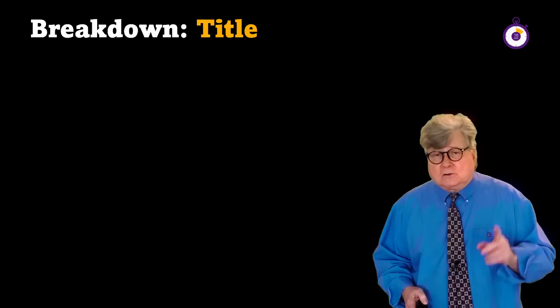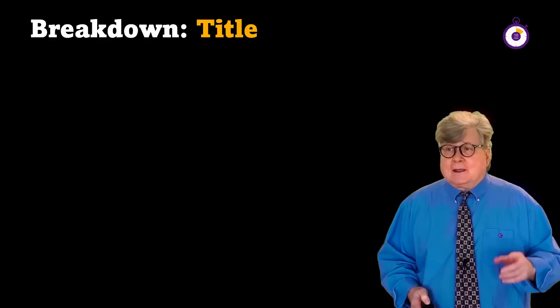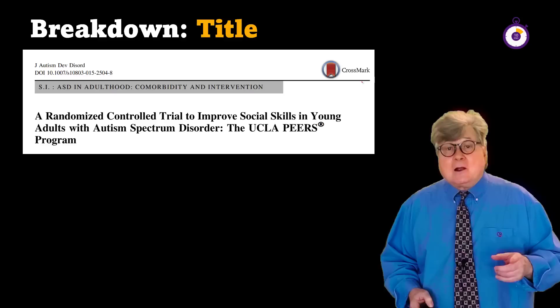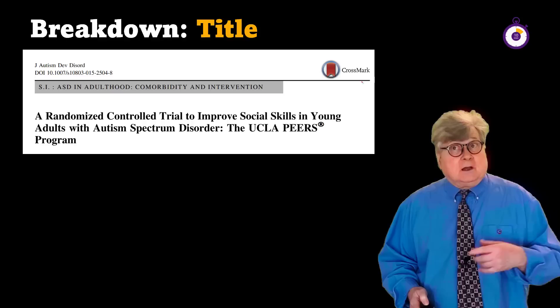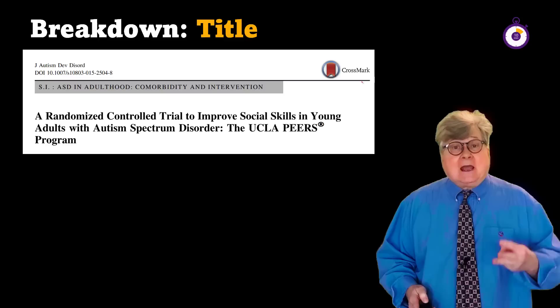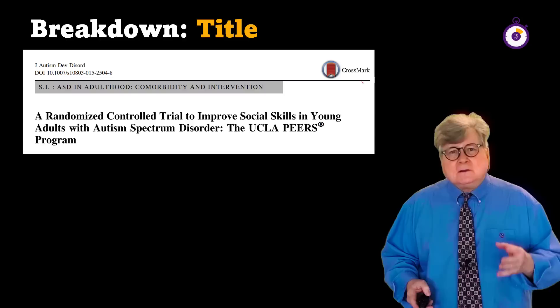First, let's take a look at titles. Journal article titles are long, but they're long for a reason. They are required to tell the reader, usually other academicians, what's being done, why it's being done, how it's being done, and to whom it's being done. So think of journal article titles as a one-sentence summary of the article.